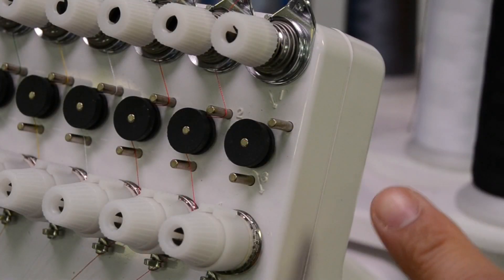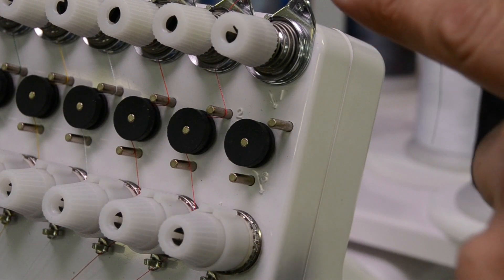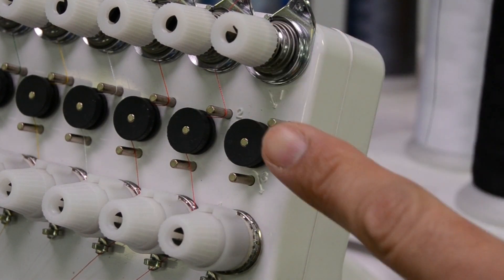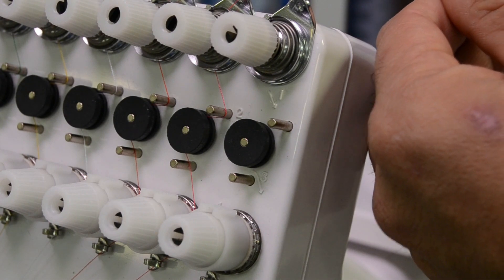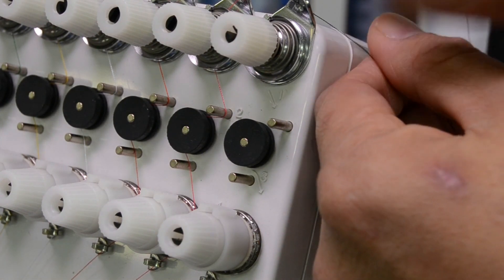First in the sewing head the thread must pass first through the upper tensioner, then the thread brake sensor wheel, then the lower tensioner. So starting from the upper tensioner, pass the thread through the eyelet at the upper right corner of the upper tensioner.